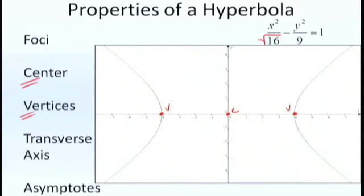Now the transverse axis is what we call the axis that goes through the center of both of those hyperbolas and kind of splits it right down the middle.